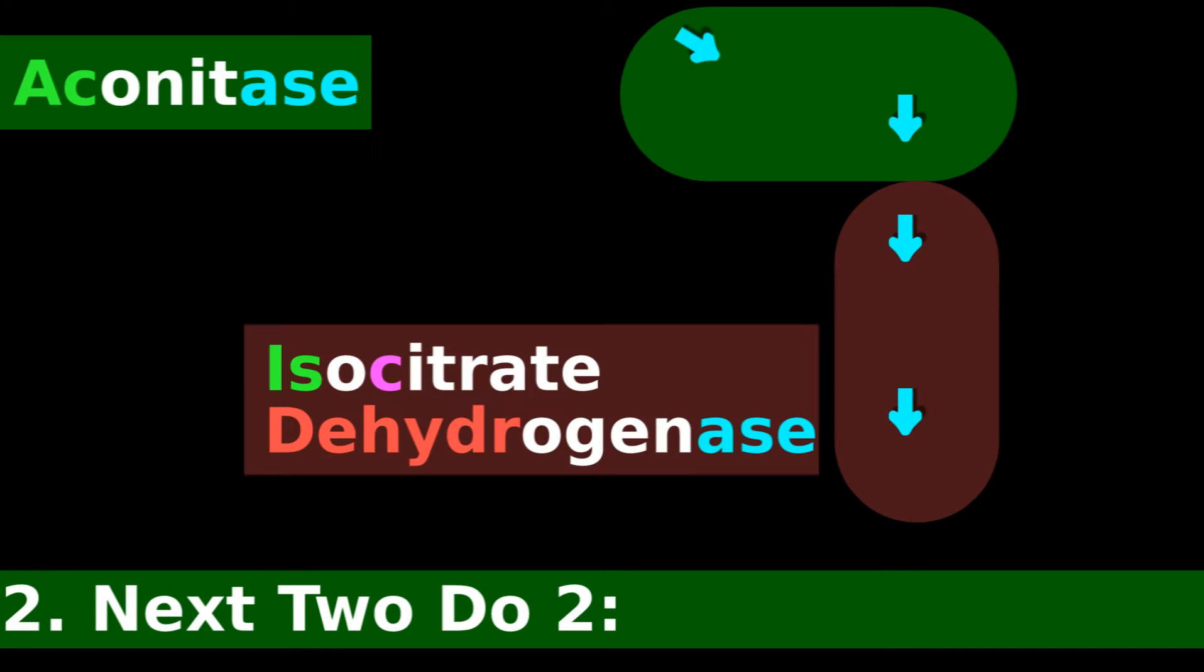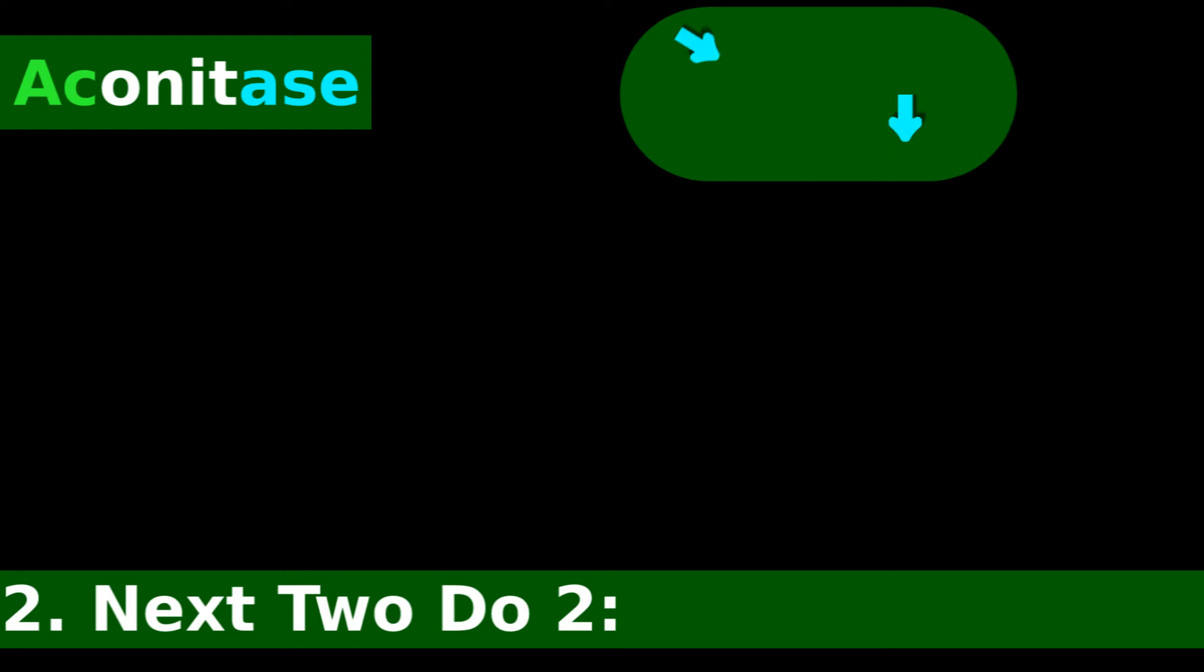Part 2. The next two do two. This means that the next two enzymes do two steps each. Aconitase does two steps. It first makes and second breaks cisaconitase.